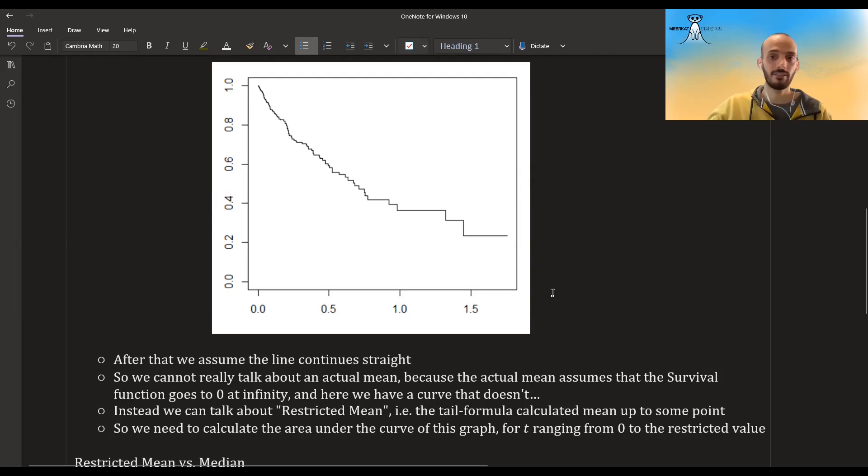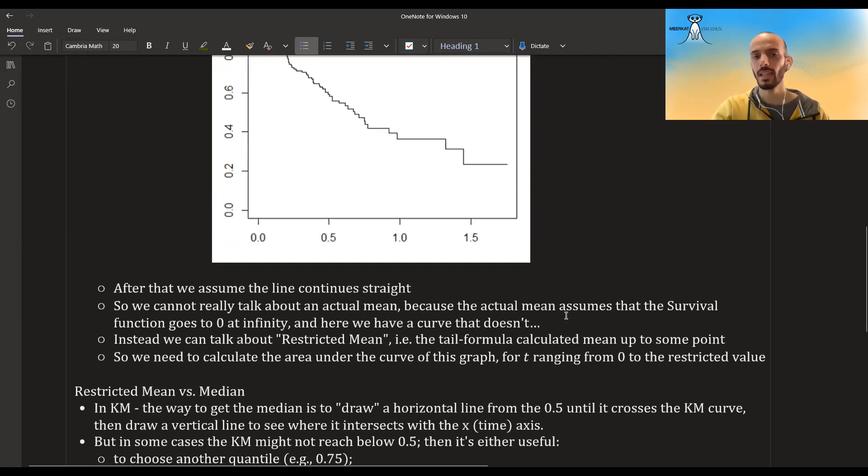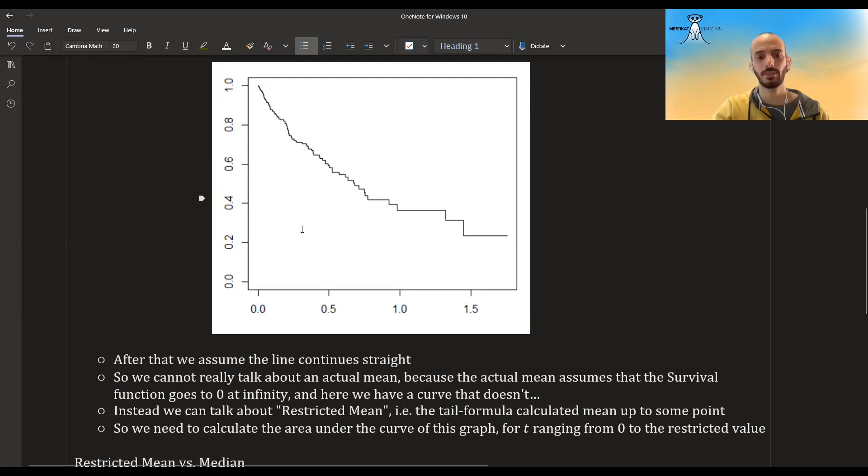We can take the integral up to one, up to one and a half, up to five, whatever we want. And so the only thing we need to do in order to calculate the restricted mean is to take the integral or the area under this curve of the Kaplan-Meier. And again, if I take it after the last point, then I just assume that the line continues straight.